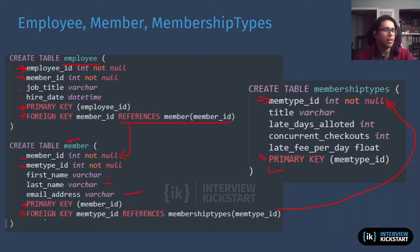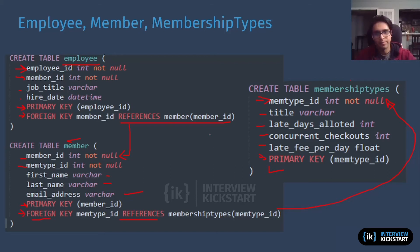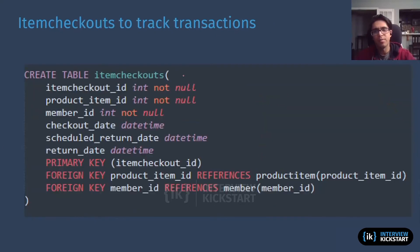Membership types is a pretty simple table where you just have some other attributes like title, then the other things associated with the membership type — the number of late days, the fee, and so on. That was the first cluster keeping track of employees, members, and membership types.